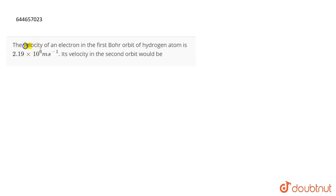The question is: the velocity of an electron in the first Bohr orbit of hydrogen atom is 2.19 × 10^6 meter per second. What will be the velocity in the second orbit?